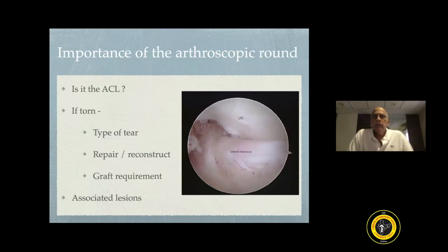We have seen meniscal ACL mimics. For example, in one case there was a lateral meniscus discoid which was stuck in the intercondylar notch and it presented like an ACL deficient knee. The MRI had suggested a sprained ACL. If we would have harvested the graft, we would have found that the ACL was intact, and this would have been a futile graft harvest.